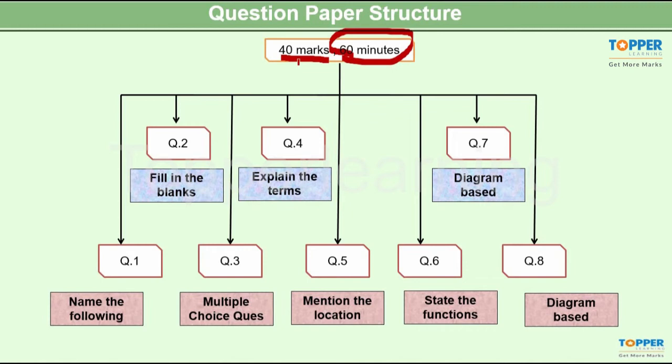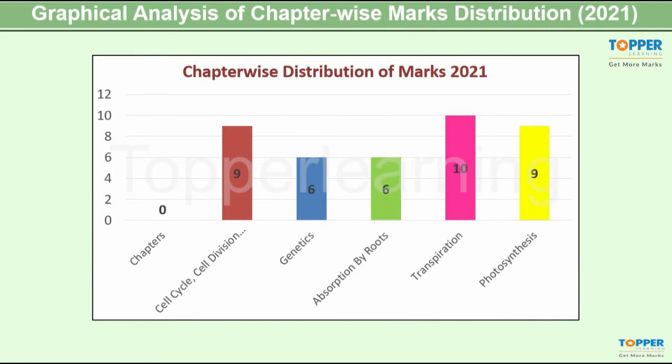Now let us see what was the weightage of every chapter. We know that CISCE had reduced the syllabus for term 1. That is, they had given specific chapters from which only the questions would be picked. There were two units, basic biology and plant physiology for term 1 syllabus.